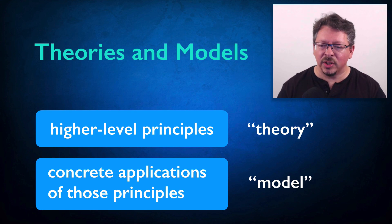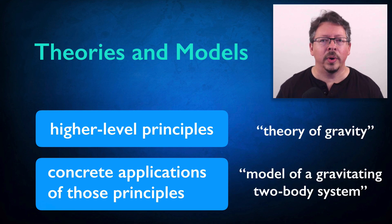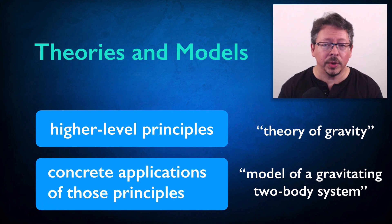But if we're talking about specific concrete applications of these high-level principles to describe a particular class of systems, then we're more likely to use the language of models. For example, if we have a set of general principles that describe how gravitational forces behave, or what the nature of the gravitational attraction is, then we're going to call that a theory of gravity. Newton developed a theory of gravity. Einstein developed a theory of gravity.